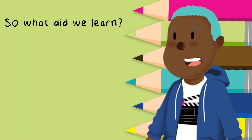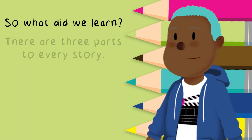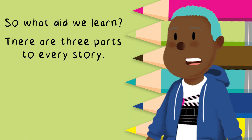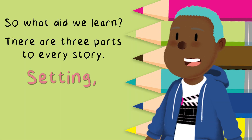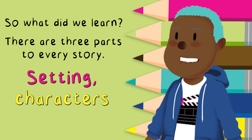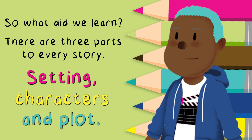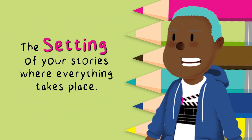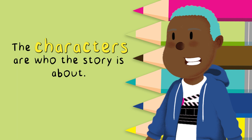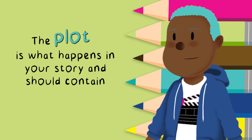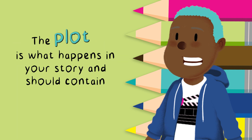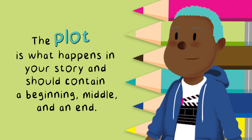So what do we learn? There are three parts to every story: the setting, characters, and plot. The setting of your story is where everything takes place. The characters are who the story is about. The plot is what happens in your story and should contain a beginning, middle, and an end.